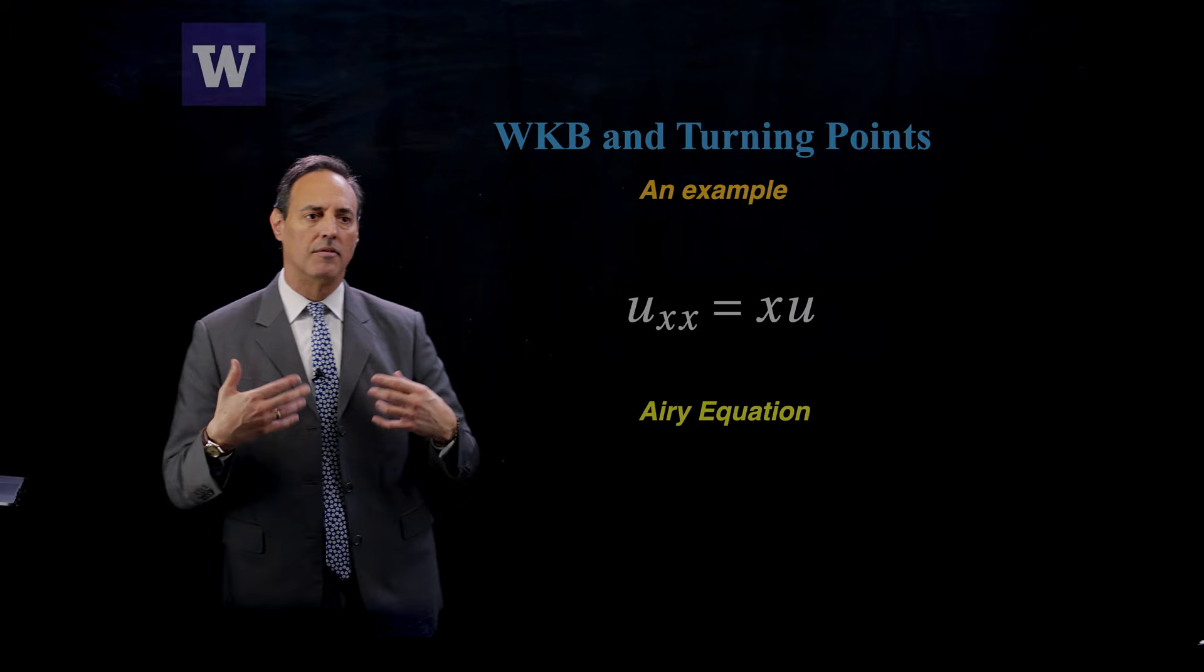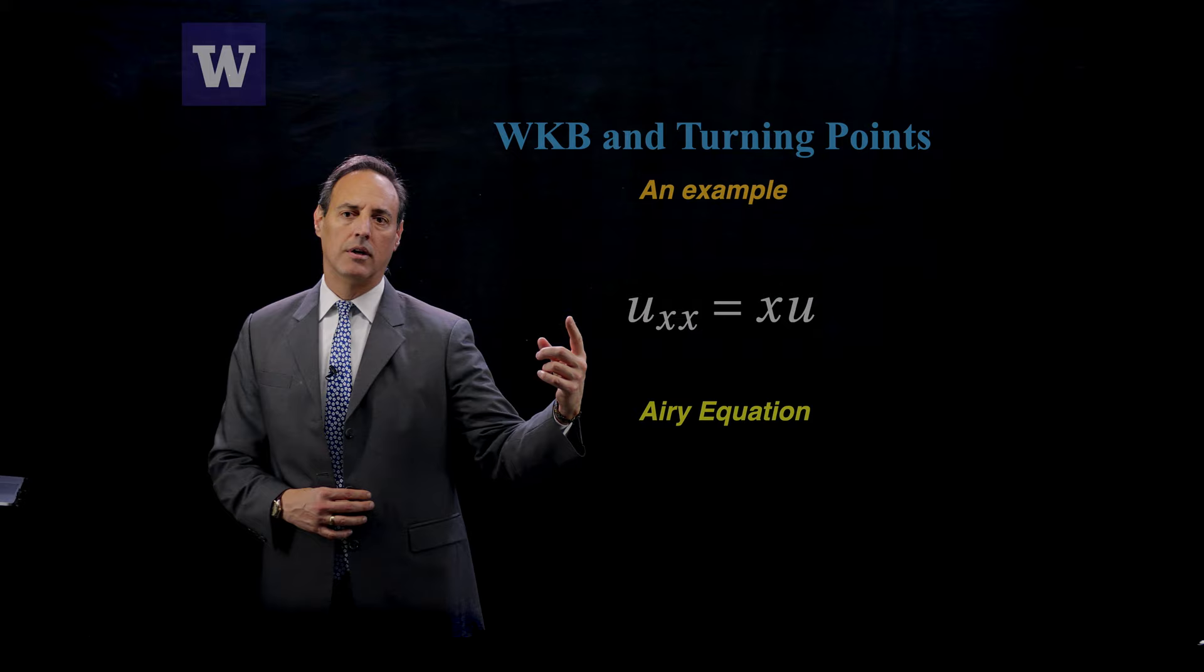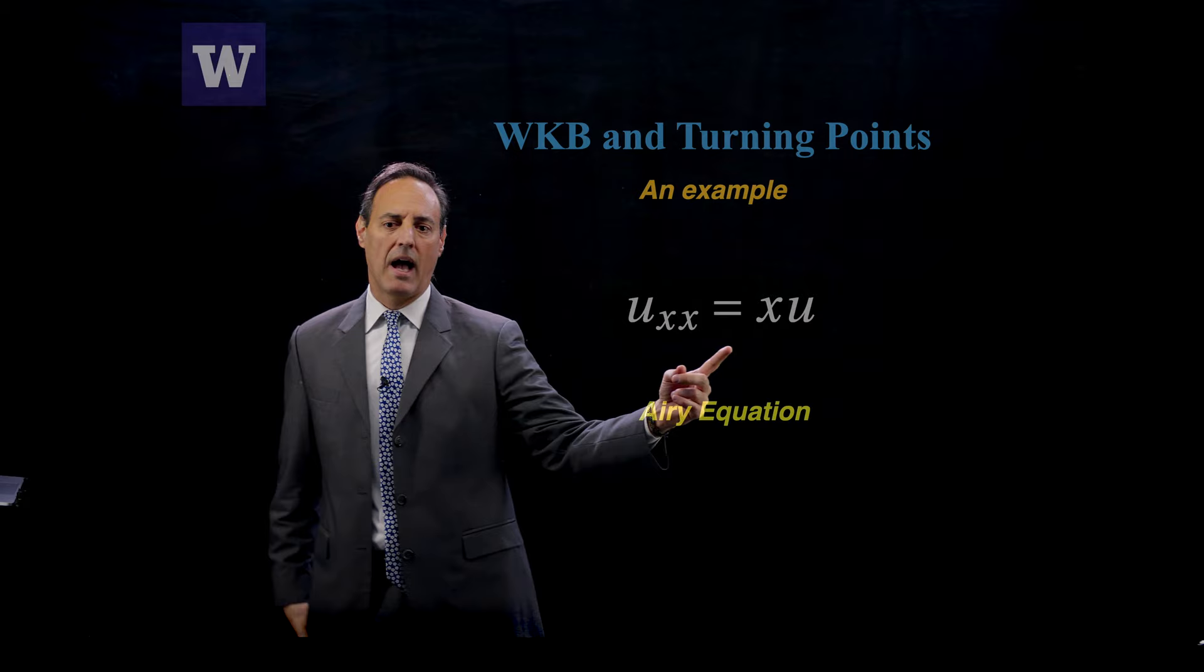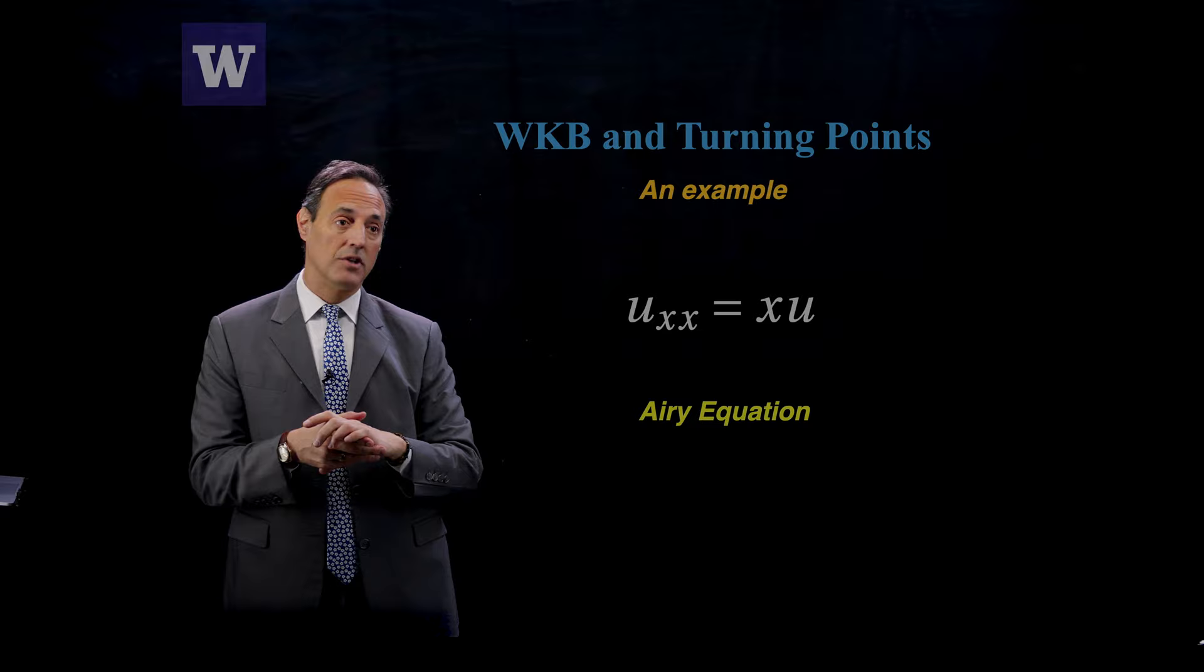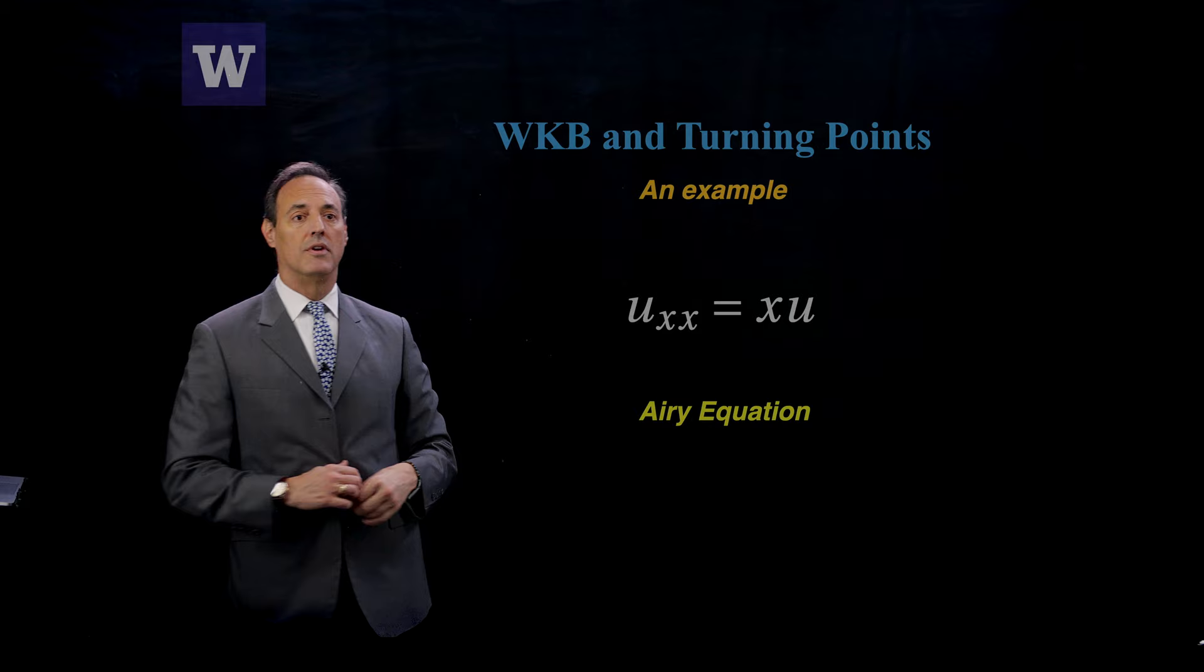Another way to think about this is you have, this is something like Schrodinger, but what you have here is a potential that's linear. So you have at x equals zero, this is a line and so you're interested in what happens with this linear potential and specifically around x equals zero.